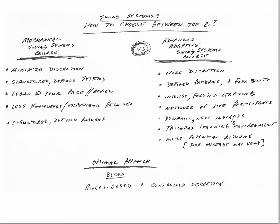The optimal approach, naturally, I would say is to blend so that you get this combination of the rules-based approach contained in the mechanical swing systems and the controlled discretion that's available from learning the advanced and adaptive swing system courses.